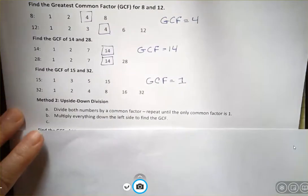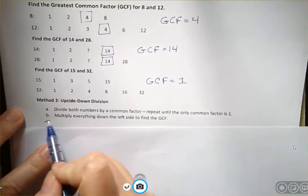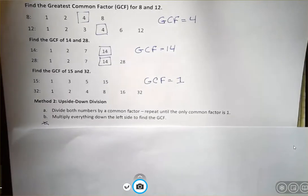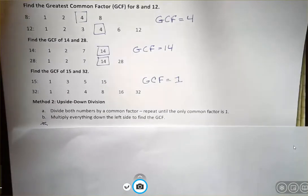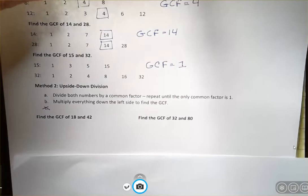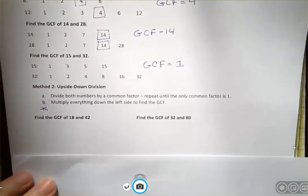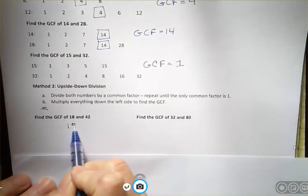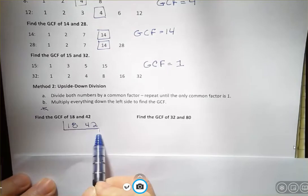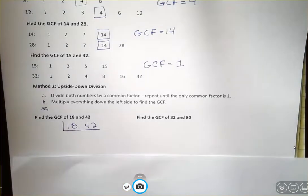And the second method, divide both numbers by a common factor and repeat until the only common factor is one, and then multiply everything down the left side to find the GCF. So let's look at that process for 18 and 42. So I'm going to write 18 and 42. And I'm doing upside down divisions. So I'm looking for something that goes into 18 and 42.